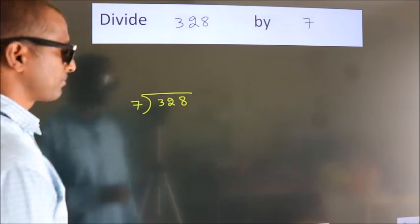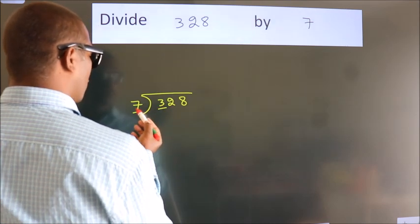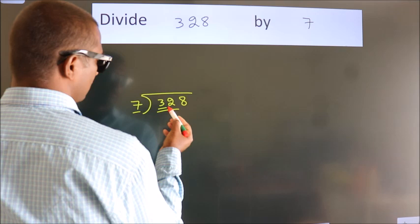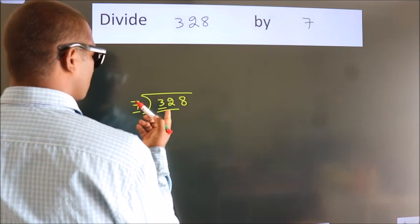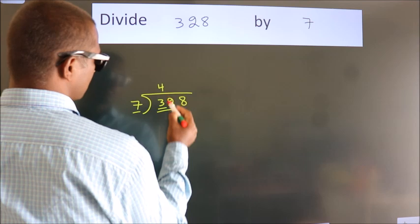Next, here we have 3, here 7. 3 is smaller than 7, so we should take 2 numbers: 32. A number close to 32 in the 7 table is 7 fours, 28.